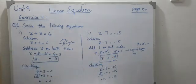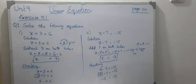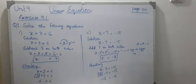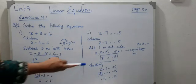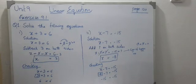Checking: put x equals minus 8 into the main equation x minus 7 equals minus 15. Minus 8 minus 7 gives minus 15, which equals minus 15. Both sides are equal, so this is confirmed as a linear equation solution.